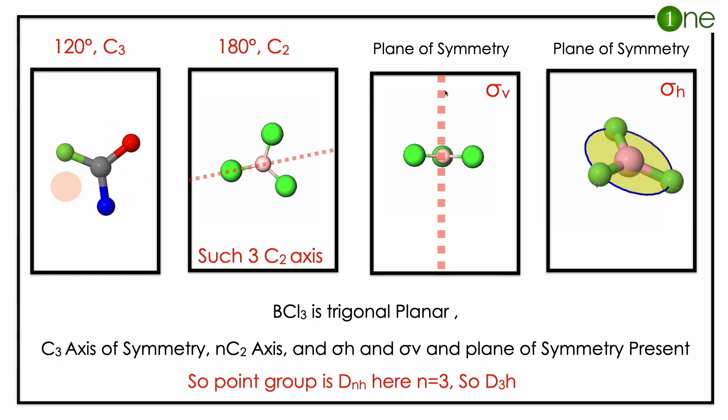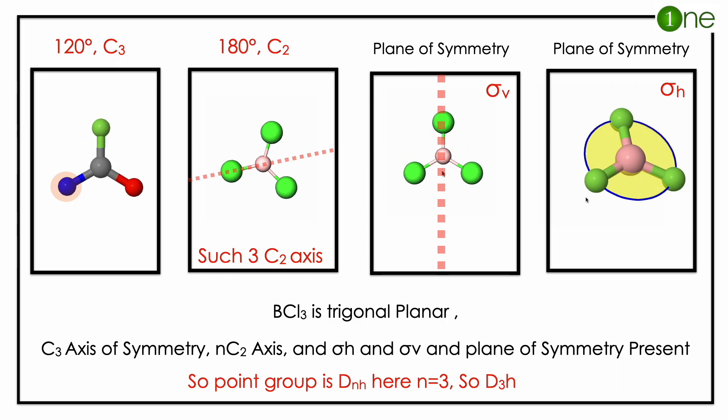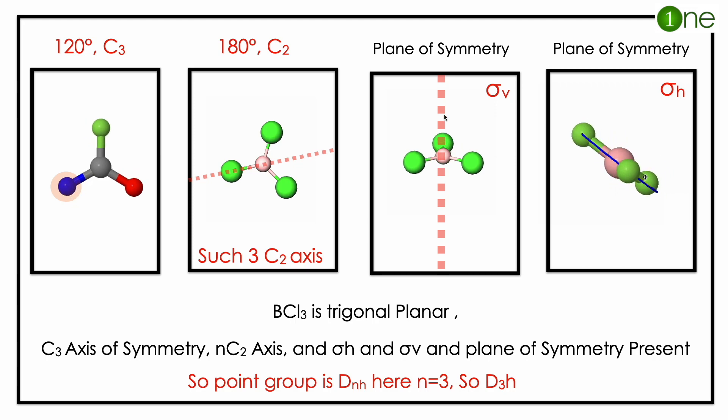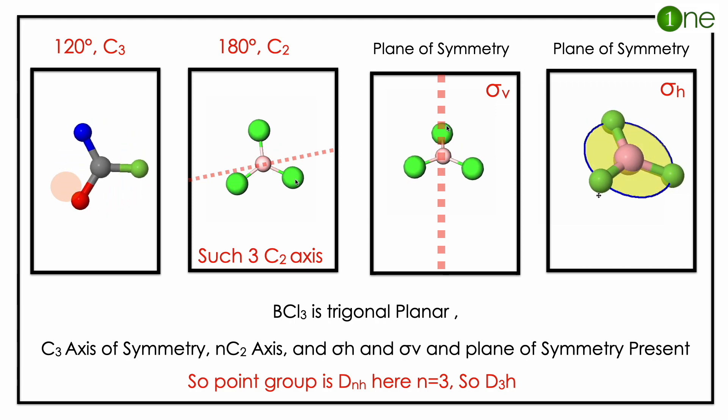So the point group you should decide by C3 axis and n C2 axis, sigma h and sigma v. Normally such a kind of arrangement leads to Dnh. Dnh is where n is 3, so the point group is D3h. So the point group of BCl3 is D3h.